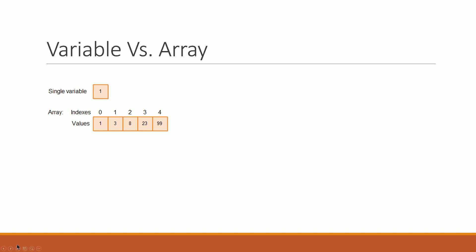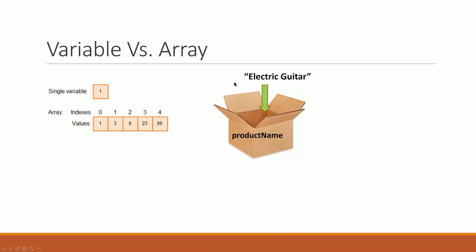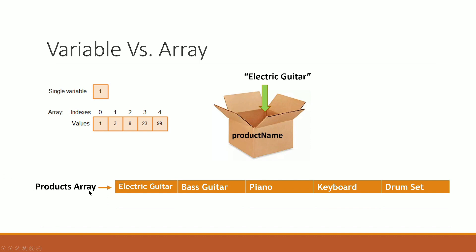It's indexed in this array. The solution is zero-based indexing. If you want to see the array, you can see the array number. You can see the address index 0, 1, 2, 3, 4. This is electric guitar, bass guitar, piano, keyboard, and transfer. Now the array is indexed. The index starts in the computer at 0. The array elements are 0, 1, 2, 3, 4.